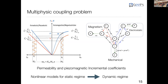For the piezoelectric, we work in a linear domain. For the magnetostrictive, it is necessary to know the permeability and the incremental piezo-magnetic coefficient. For that, it is necessary to develop a non-linear model in the static regime, and then study the dynamic regime.